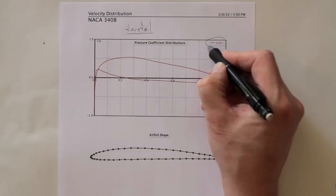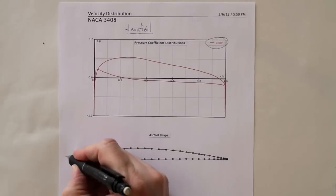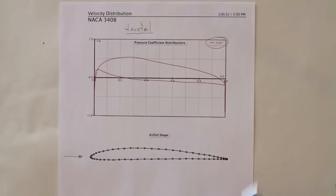In this case it's operating at zero angle of attack, so that means the flow is coming this way, or seen another way, the wing is moving this way through the air.